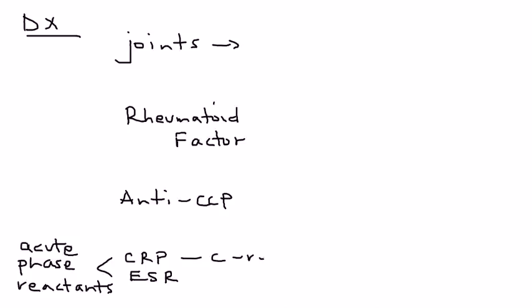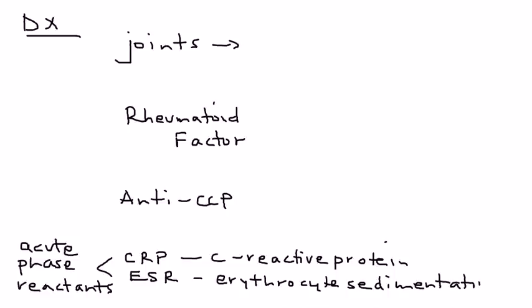CRP is an acronym for C-reactive protein. And ESR is an acronym for erythrocyte sedimentation rate. Both of these should be elevated. But the one that's really specific is ESR because it will be elevated in 90% of patients with rheumatoid arthritis.